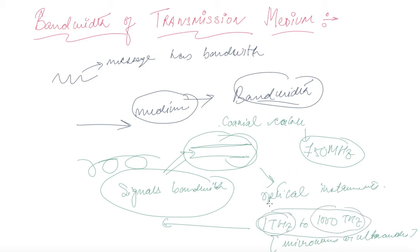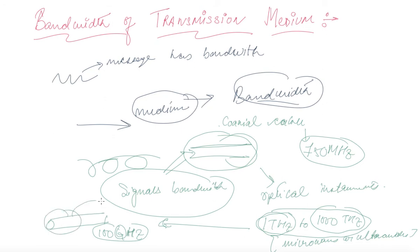Microwaves and ultraviolet rays have this particular frequency range. However, the optical cable through which we send signals has a bandwidth of only 100 gigahertz. So the question arises: will this optical fiber be able to carry microwaves or ultraviolet waves?